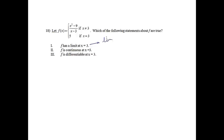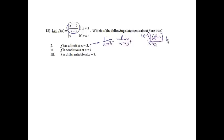Problem 18: let f of x equal this piecewise function — different things happen when x equals 3 versus when x doesn't equal 3. For statement 1, f has a limit at x equals 3, meaning the left-hand limit must equal the right-hand limit. The expression for x not equal to 3 applies from both sides. Factoring gives x minus 3 times x plus 3 over x minus 3; the x minus 3 cancels, and plugging in 3 gives 6. So the limit is 6 and statement 1 is true.